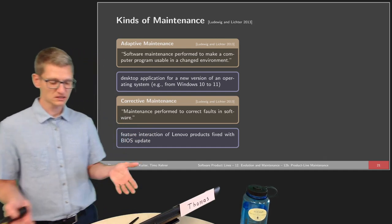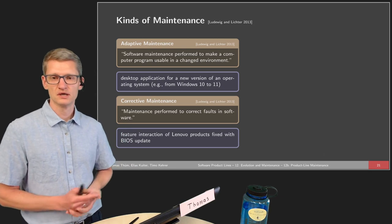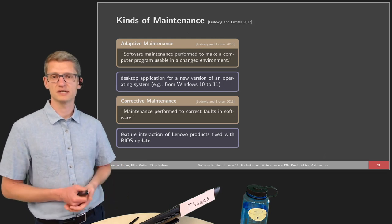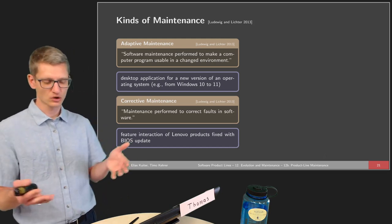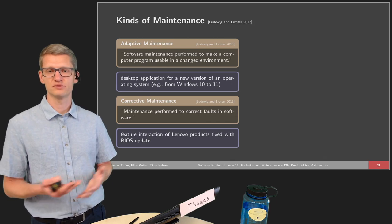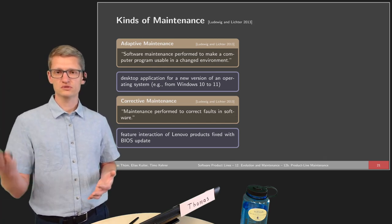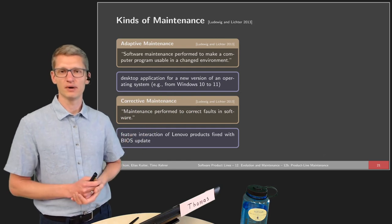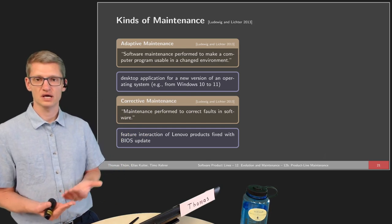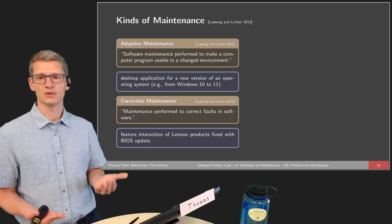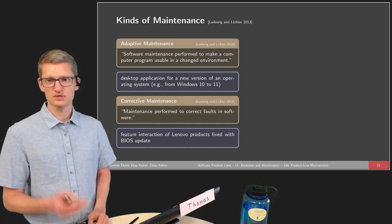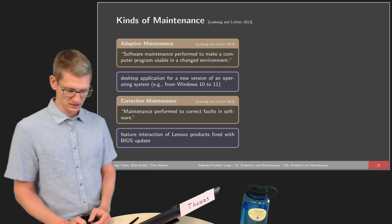Then we have corrective maintenance: maintenance performed to correct faults in software. For instance, looking at the Lenovo compatibility matrices from lecture 9, certain combinations of notebooks and accessories are problematic. Sometimes these can be fixed by changing the software — for instance, a BIOS update — and we've seen examples of this in earlier slides.